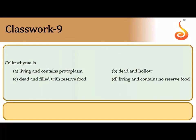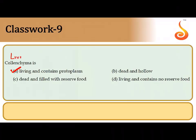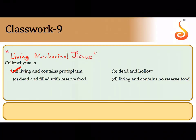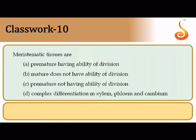Collenchyma is living and contains protoplasm — that is why it is called the living mechanical tissue. Remember, collenchyma is absent in monocots and in dicot roots. Meristematic tissues are premature — a tissue is considered premature when it is constantly dividing. Only after it stops dividing and takes up a particular function do we call it mature or differentiated. Meristematic cells are premature but have a constant ability to divide, so the correct answer is option A.